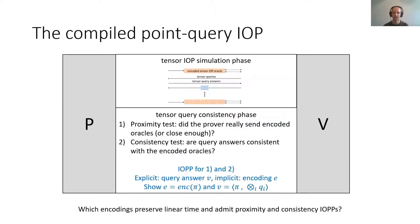After the simulation phase, we introduce a tensor query consistency phase, in which the prover and verifier conduct a proximity test — which checks whether the prover really sent encoded proof oracles — and a consistency test, which shows that the prover's tensor query answers must be consistent with the encoded proof oracles. This boils down to designing an efficient IOP of proximity to handle these tasks. We want to preserve the linear time property of an input tensor query IOP, so we have to choose our encoding scheme very carefully to make sure it not only preserves linear time of the underlying tensor IOP, but also admits efficient proximity and consistency tests.